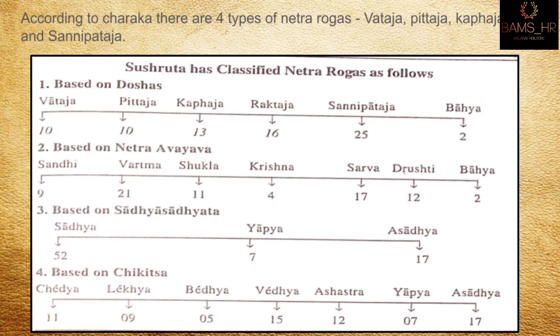They are classified based on dosha, netra vayva, sadhya-asadhya, and chikitsa. For sadhya-asadhya: asadhya 52, yapya 7, sadhya 17.